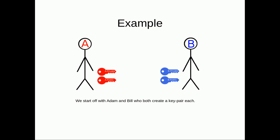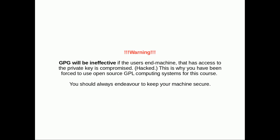As an example, we start off with Adam and Bill, who each create a key pair. Before we continue, we should discuss GPG's main weakness: GPG will be ineffective if the user's end machine that has access to the private key has been compromised or hacked, or has had a keylogger installed on it. This is why you need to use open-source GPL computing systems. That's not even enough — you should always endeavor to keep your machine secure. This involves things like firewalls, firejail, AppArmor, and making sure you don't install software that's not from the default repositories.